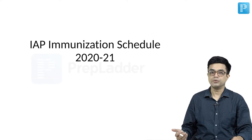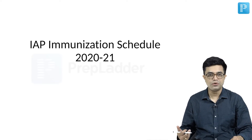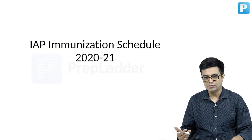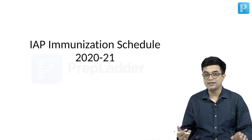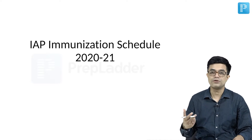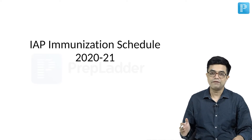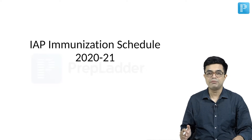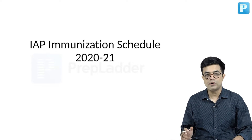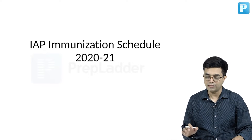IAP immunization schedule. The IAP immunization schedule is very similar to the national immunization schedule, but there are some important differences, and those differences are the ones you should focus upon. IAP has revised its schedule for 2021 very recently, and so we will be discussing the latest one.